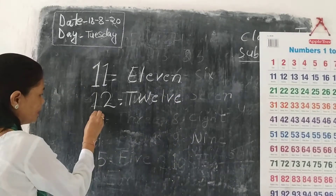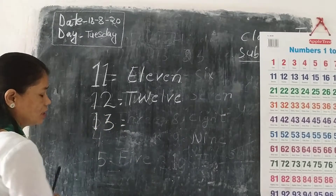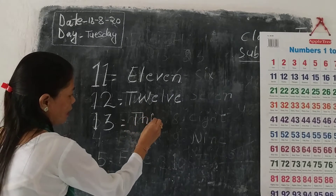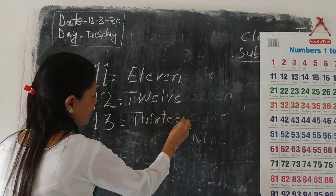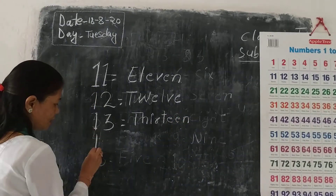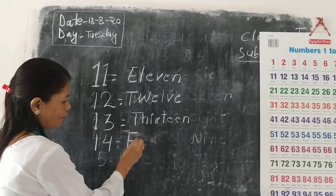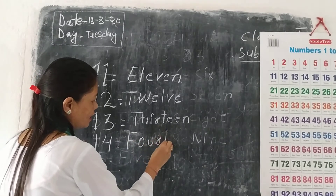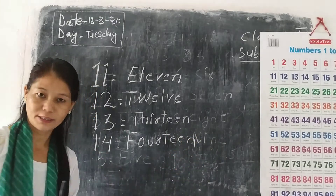And 13 — spelling: T-H-I-R-T-E-E-N. 13. And 14 — spelling: F-O-U-R-T-E-E-N. 14.